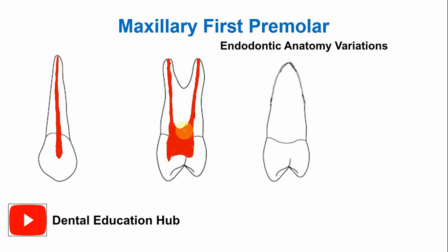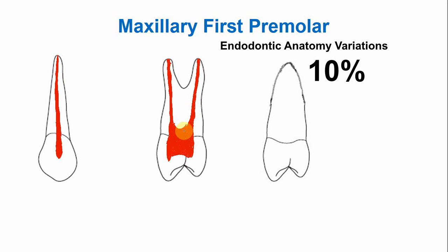There are variations in the endodontic anatomy and morphology of maxillary first premolars. Around 10% of maxillary first premolars have a single root and canal. The pulp chamber is nearly the same, with a more well-developed buccal pulp horn compared to the lingual or palatal pulp horn, followed by a gradual taper and the canal opening at the apex of the root.